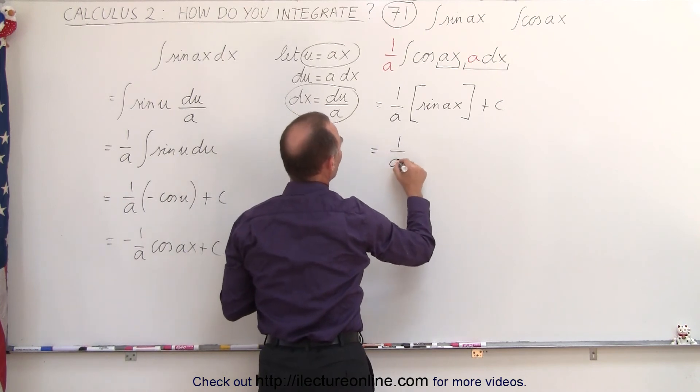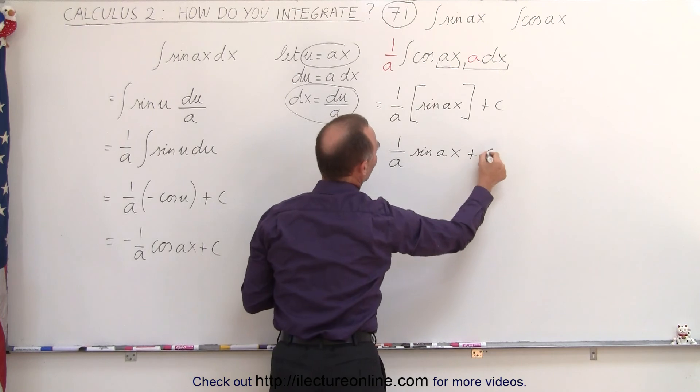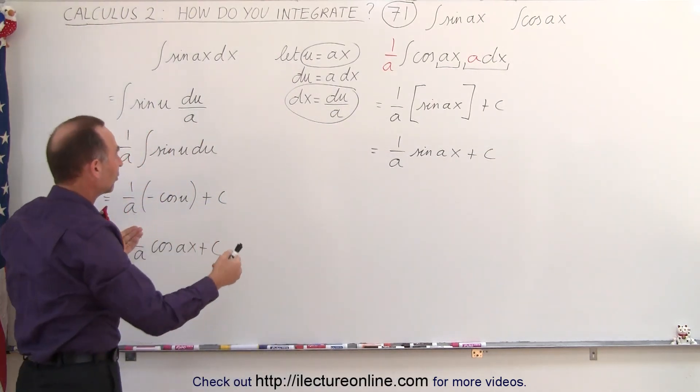Which simply then gets written to be 1 over A times the sine of Ax plus a constant of integration. Notice we end up with the exact same result.